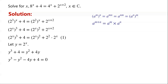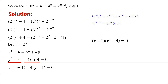y cubed minus y squared have a common factor y squared and can be factorized as y squared times (y minus 1). Negative 4y plus 4 have a common factor 4 and can be factorized as negative 4 times (y minus 1). Now both terms have a common factor (y minus 1), so they can be written as (y minus 1)(y squared minus 4). So either y equals 1, or y squared equals 4.